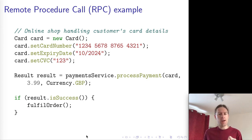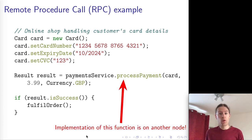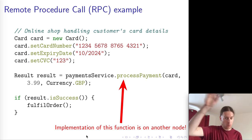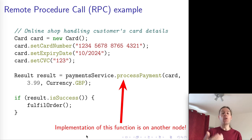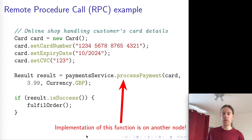This is quite interesting because the payment service is running on a different node, run by a different company — it's not part of the code base of the online shop. So when you call this process payment function, the implementation is not within your program; it's somewhere on another node at the other end of an internet connection. What looks like a function call or method call is actually being translated into some kind of network communication. This is called a remote procedure call, or RPC. Java calls the same thing remote method invocation — just a different word for essentially the same idea.